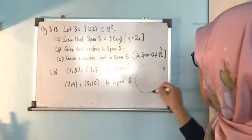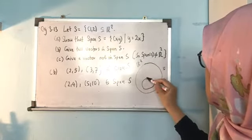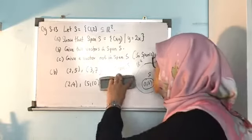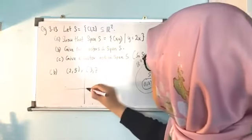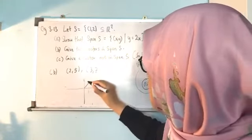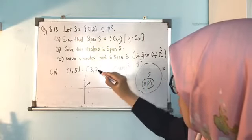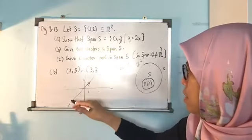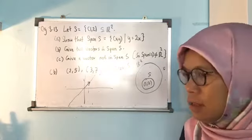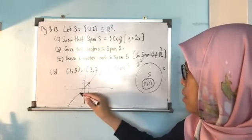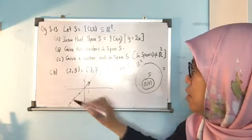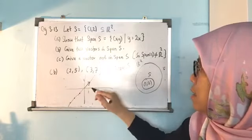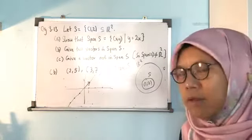If you draw this: S = {(1,2)} is a single vector. The span is the entire line through (1,2) — including (2,4), (5,10), (−1,−2), (−2,−4), etc. All vectors on the line are in the span. A vector not in the span is anything off the line, like (2,5) or (2,3). There are many such vectors outside the span.